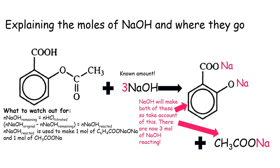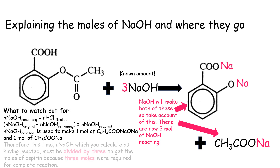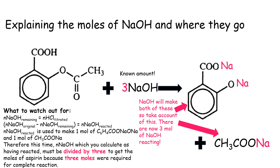The sodium hydroxide that reacted makes one mole of the carboxylate salt and one mole of the other product, but there are now three moles of sodium hydroxide reacting with each mole of aspirin — hence the three in front of the NaOH. Hopefully this has been a useful look at two different ways to use the chemistry of aspirin to work out how much of it is in a tablet. Until next time, thanks for listening and see you soon.